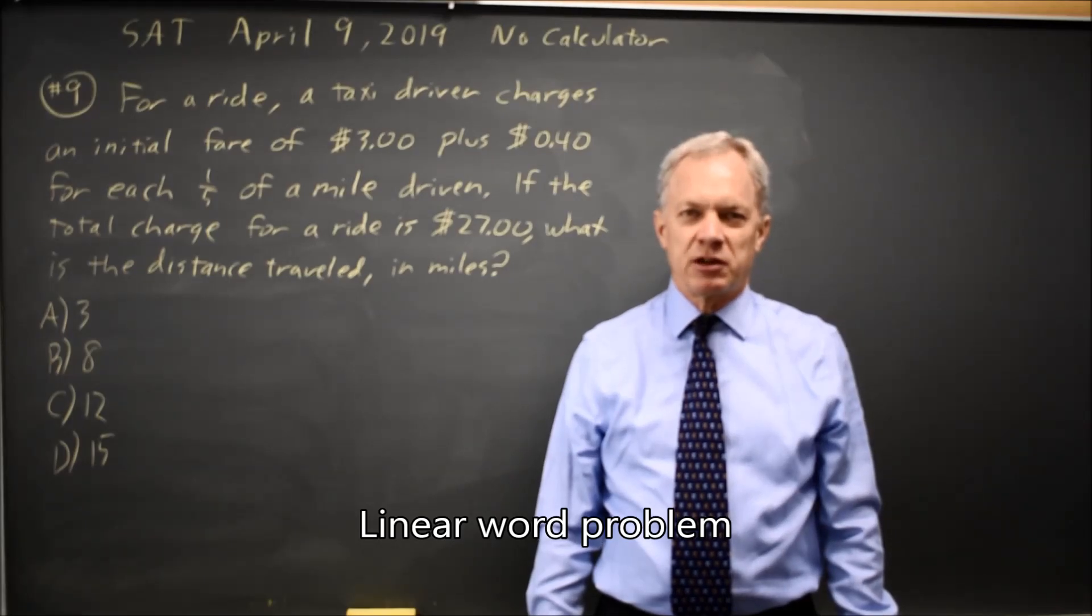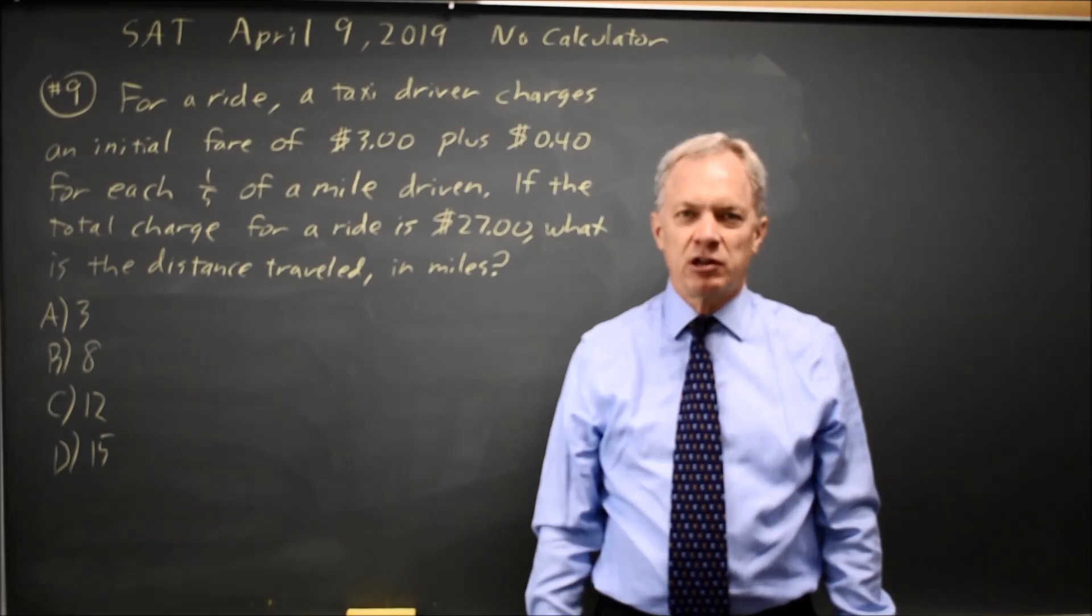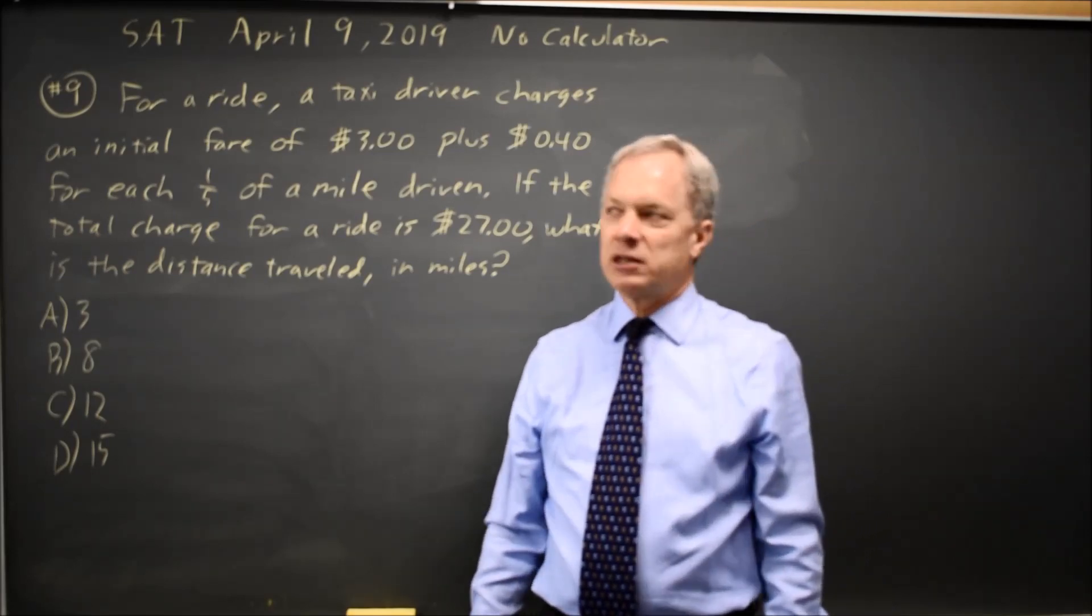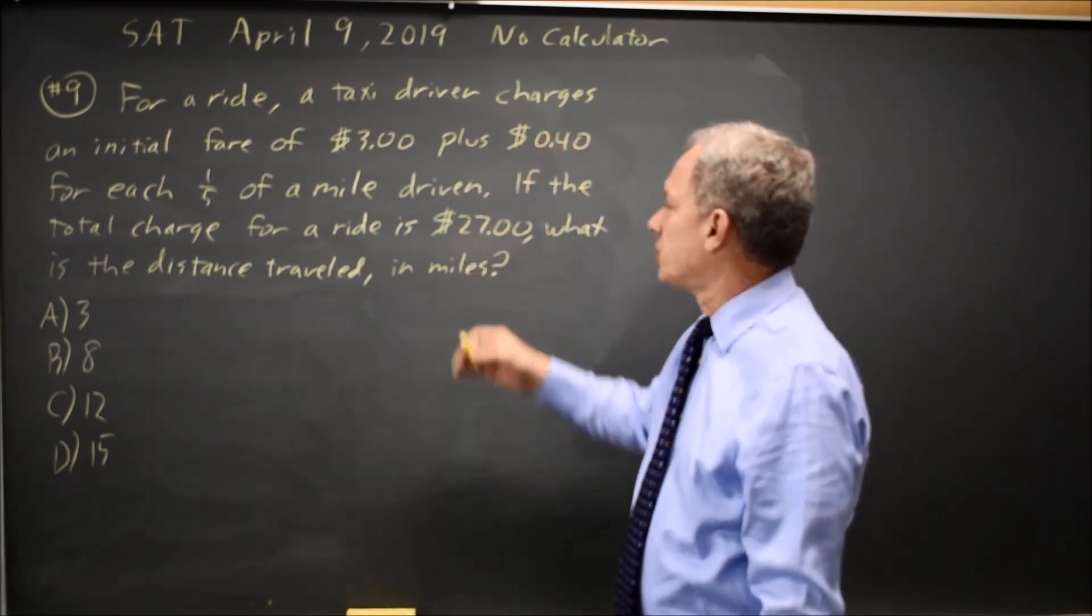This is non-calculator question number 9 from the April 2019 SAT. College Board gives us a paragraph about taxi fare. They say the fare is $3 plus 40 cents for each fifth of a mile, and the total fare is 27.